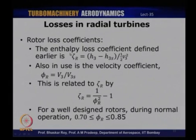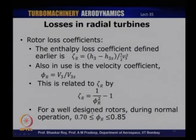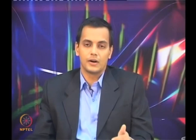For the rotor, loss coefficients are defined analogously: ζr = (H3 − H3s)/(½V3²), and velocity coefficient φr = V3/V3s, with ζr = (1/φr²) − 1. Typically, φr ranges from 0.7 to 0.85 for the rotor — noticeably lower than the nozzle, reflecting higher losses in the rotor passage.